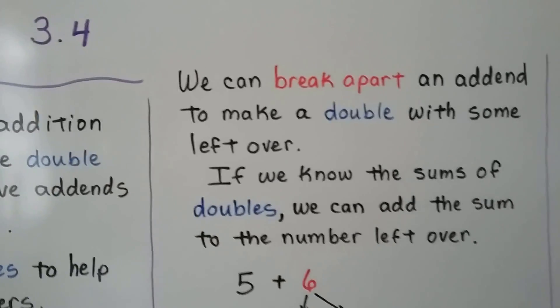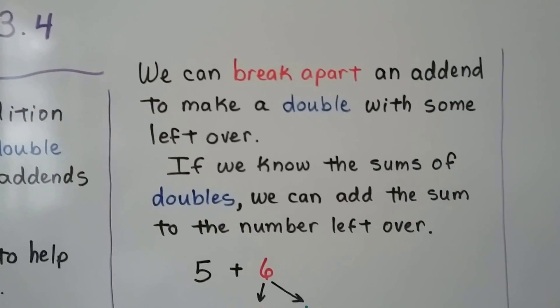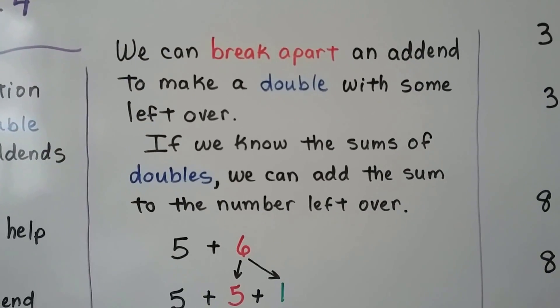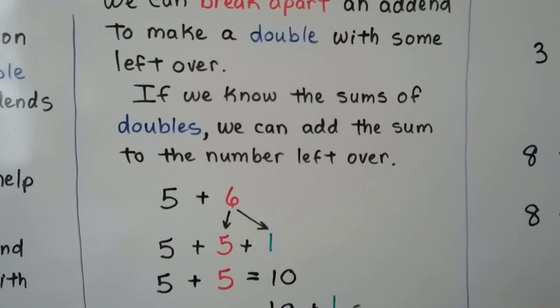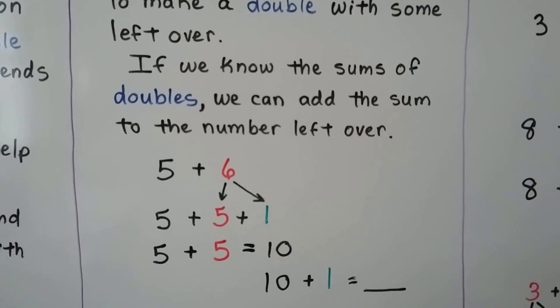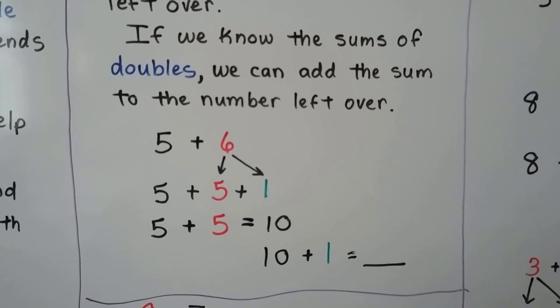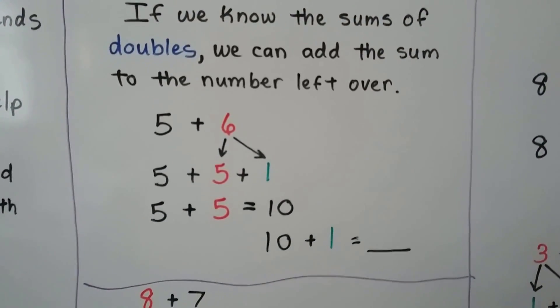We can break apart an addend to make a double with some leftover. If we know the sums of doubles, we can add the sum to the number left over.